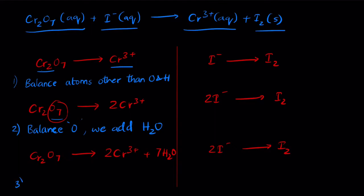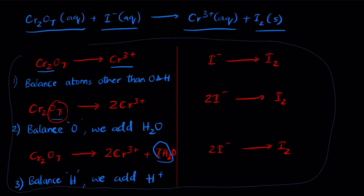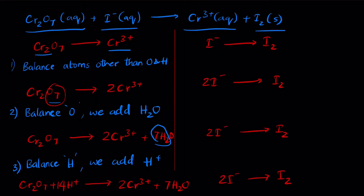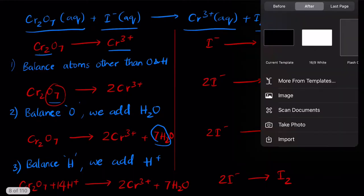Next, balance hydrogens by adding H⁺. We now have 14 hydrogens from the 7H₂O on the right, so add 14H⁺ to the left: Cr₂O₇²⁻ + 14H⁺ → 2Cr³⁺ + 7H₂O. The iodine half-reaction has no hydrogen, so it stays: 2I⁻ → I₂. Now balance the electrons.